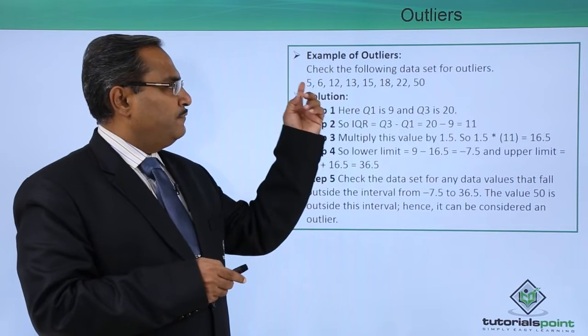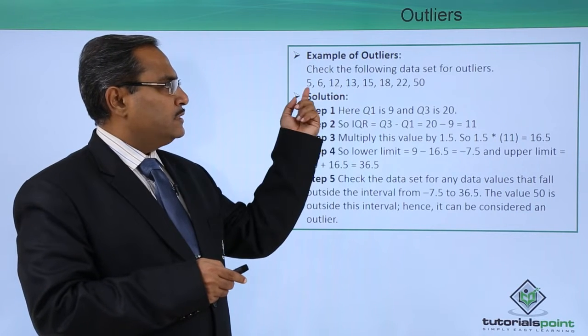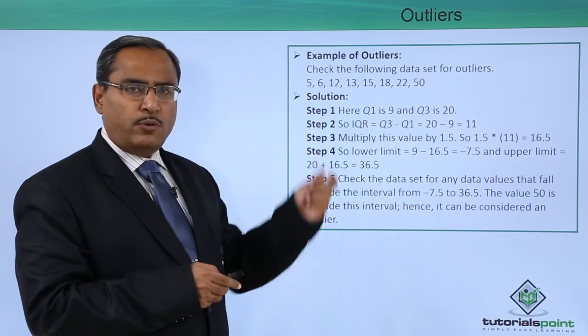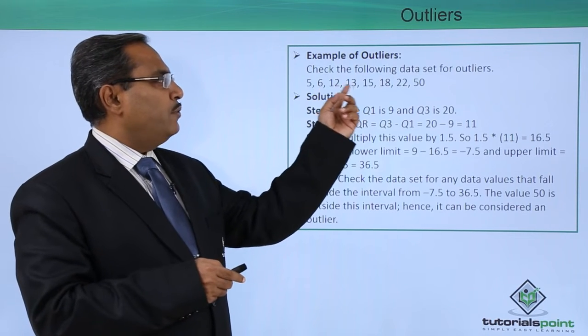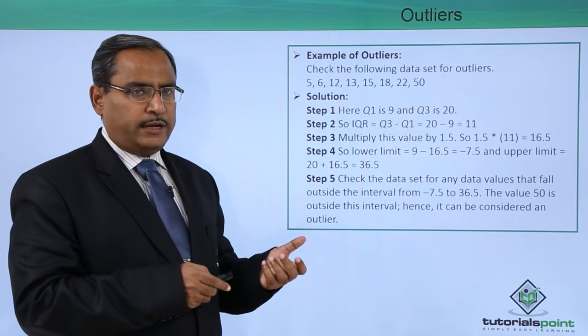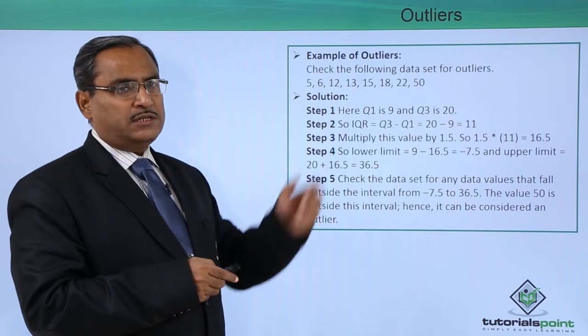In the first half before this median, we are having how many data? We are having four data. To calculate this Q1, four data means it is an even number of numbers, so I cannot get the middlemost value. I shall take the average of 6 plus 12.